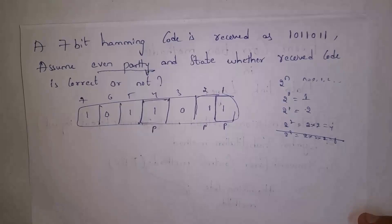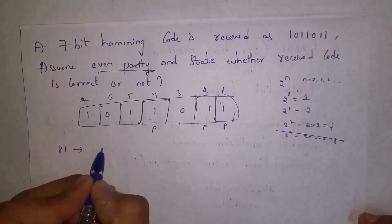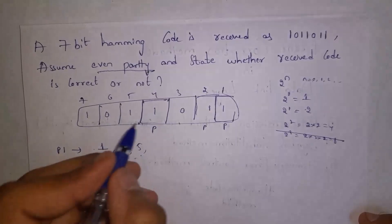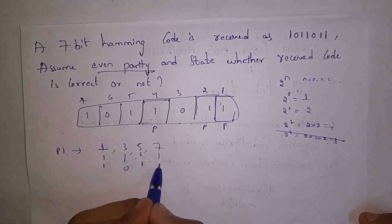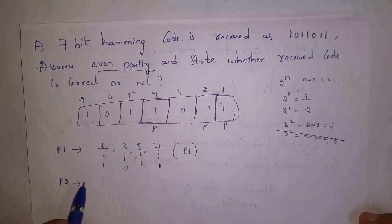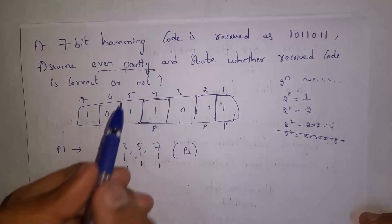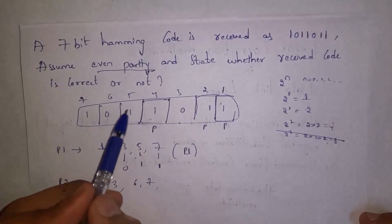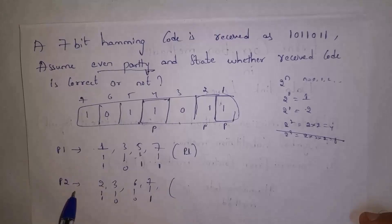For P1 (take 1, skip 1 from position 1): positions 1, 3, 5, 7 give values 1, 0, 1, 1 — three 1s, which is odd, so P1 has an error. For P2 (take 2, skip 2 from position 2): positions 2, 3, 6, 7 give values 1, 0, 0, 1 — two 1s, which is even, so P2 has no error.